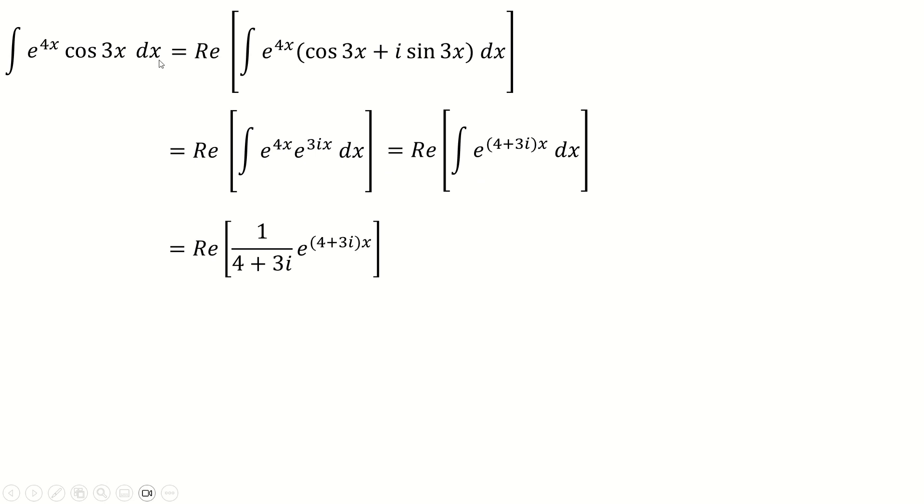We're going to do every step backwards again until we arrive back to where we started. So realize this denominator times by 4 minus 3i, 4 minus 3i.